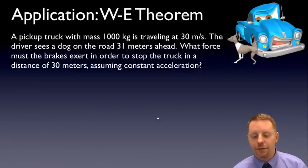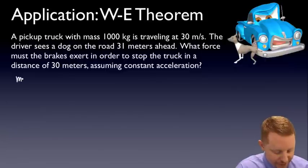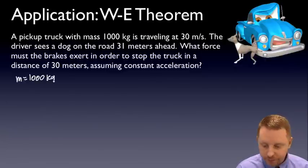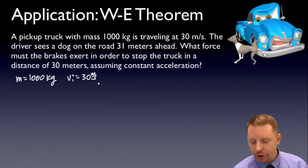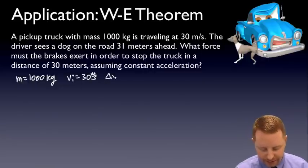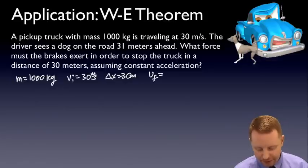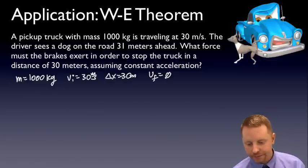assuming constant acceleration and therefore saving our dear pooch? Well, let's start off with what we know. Mass is 1000 kilograms. We know the initial velocity of the truck is 30 meters per second. We're sure hoping that the distance it takes for the truck to stop is 30 meters, and the final velocity must be zero.